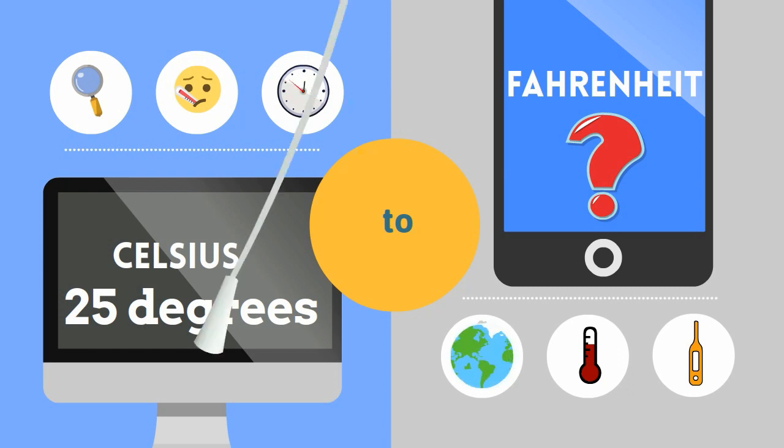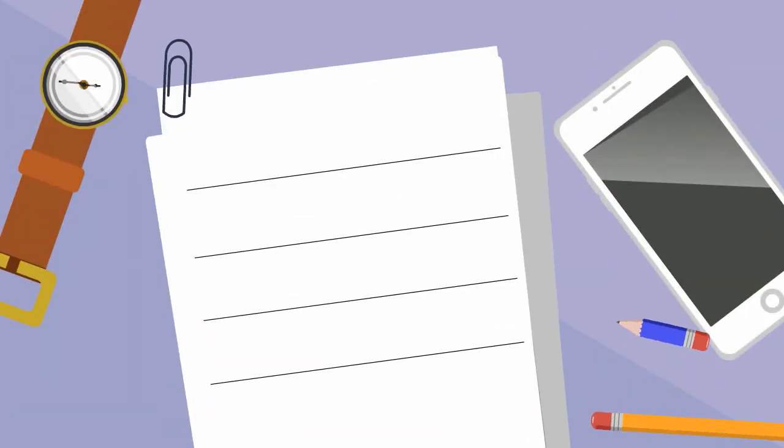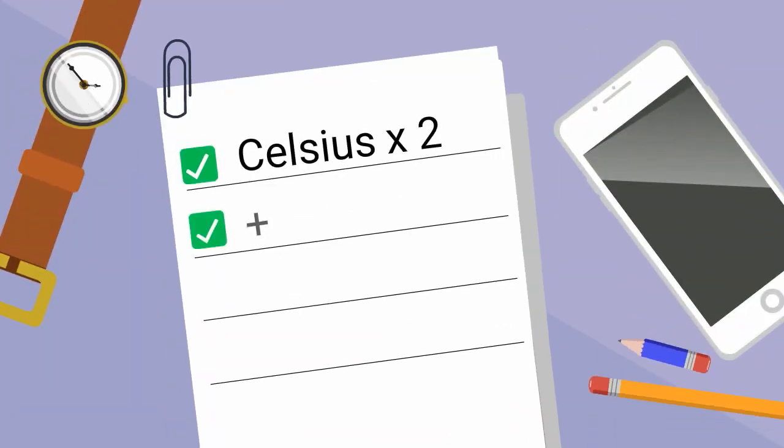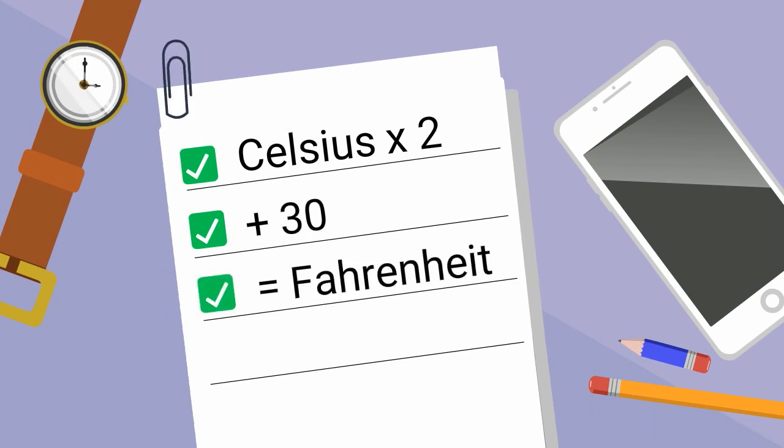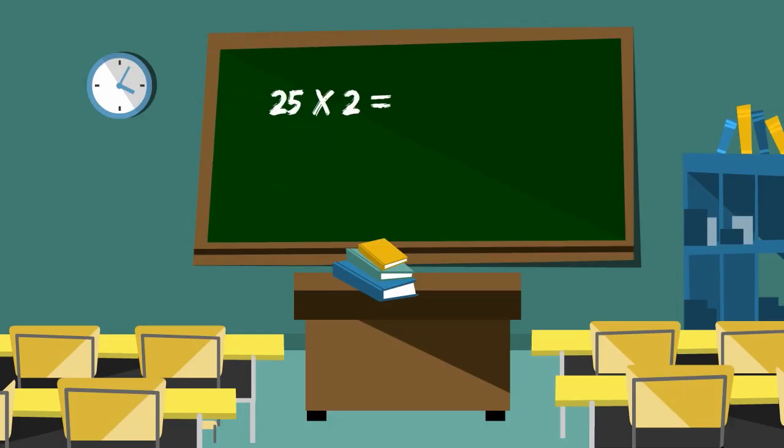Here is the trick: Double the Celsius degree and add 30. I like 30 instead of 32 because 30 is a little bit easier to add in your head. So 25 times 2 is 50 plus 30 is 80 degrees.